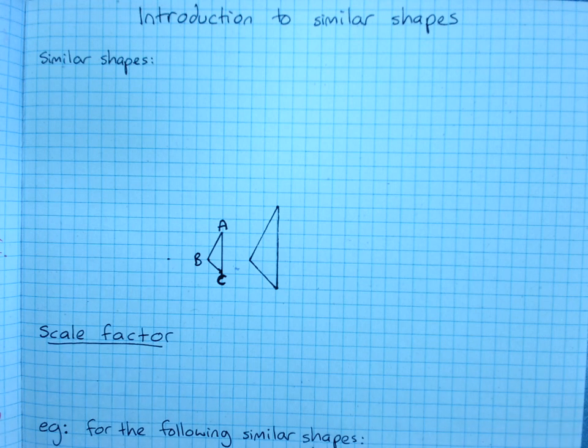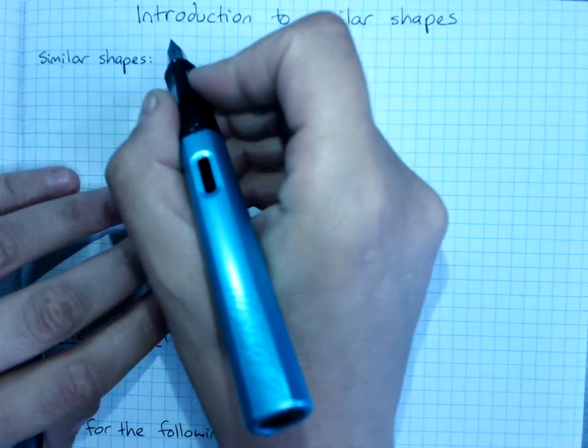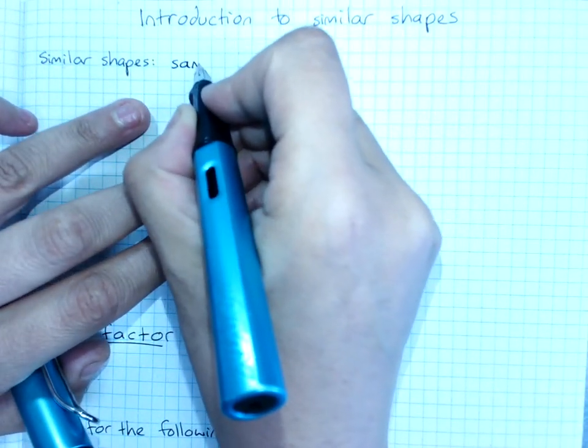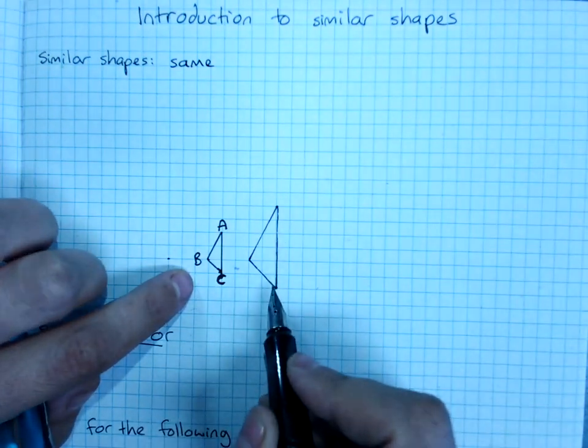Introduction to similar shapes. Similar shapes are the same shape but different size, like this example I have here.